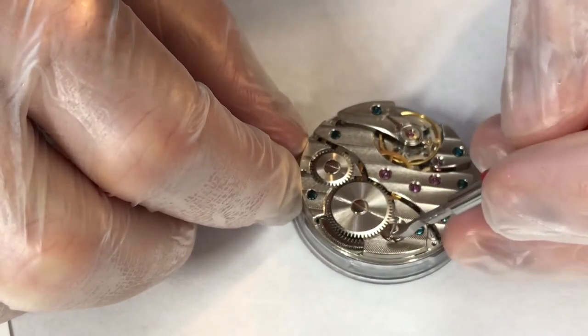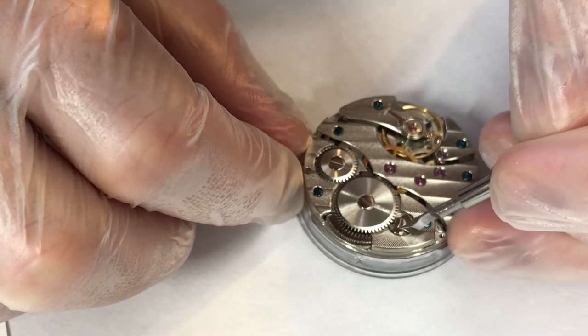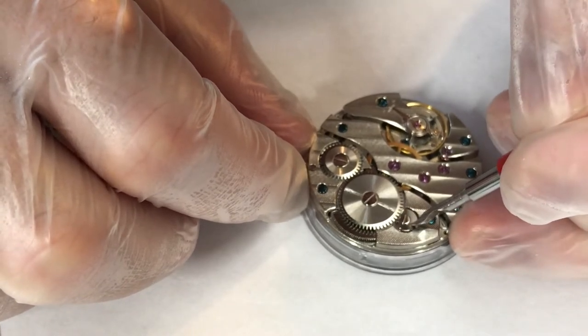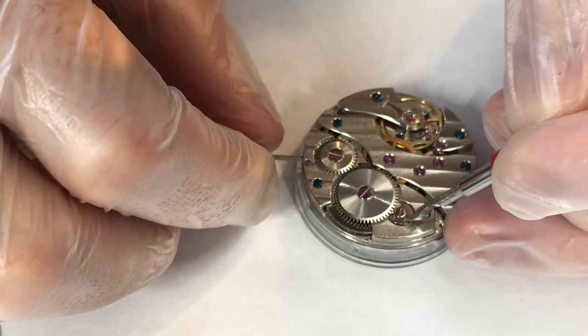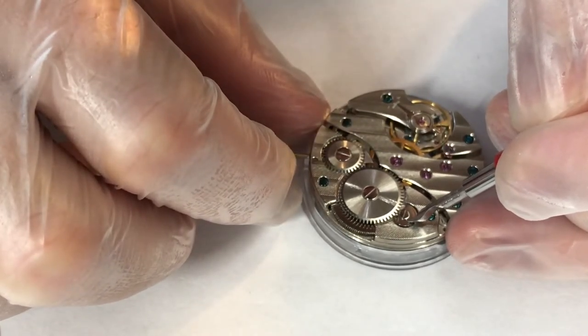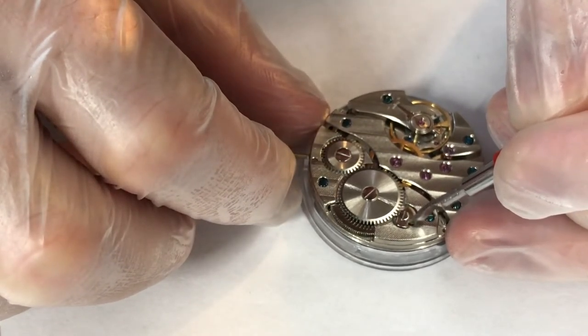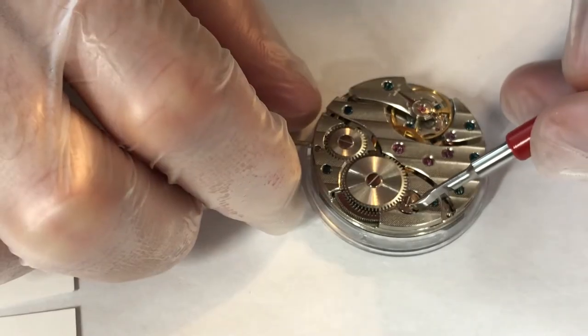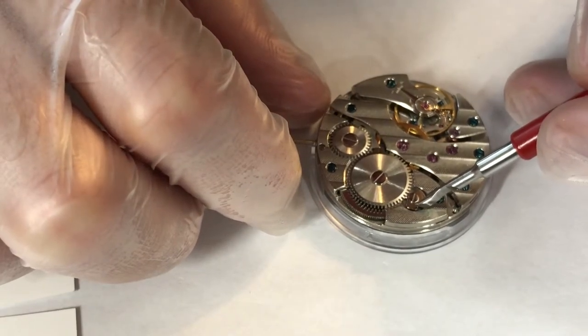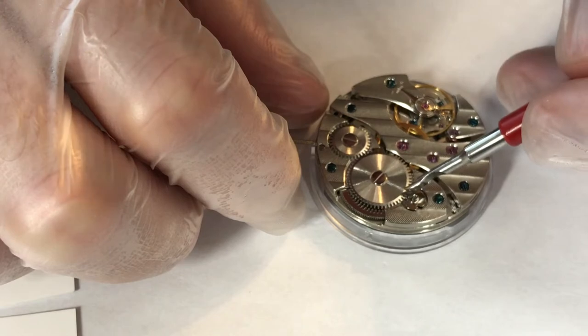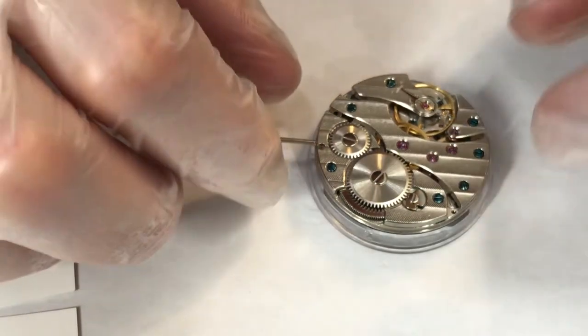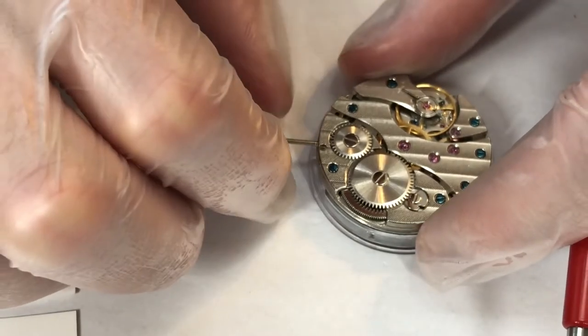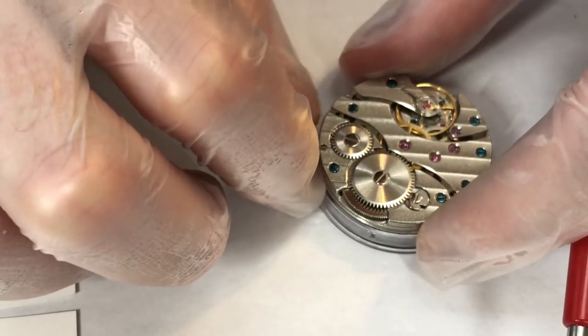That's just so it's not moving while I'm working on it. So what I'm going to do is just pull this a little bit toward me, which will disengage the mainspring and essentially releases all of the energy. What I did there was just pull the click back, which disengages it from the mainspring barrel.